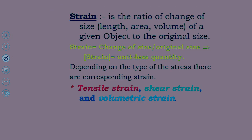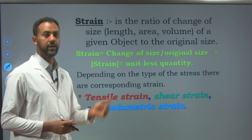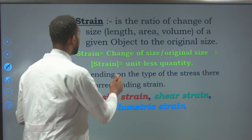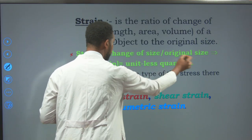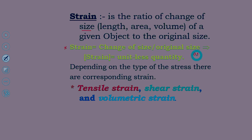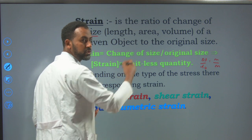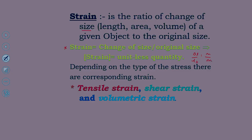The other important term under bulk matter is strain. Strain measures the ratio of change of size to the original size. The change might be in length, area, or volume. Strain equals change of size divided by original size. It is a unitless, dimensionless quantity — because change of length over original length gives meters over meters, which cancels out. Similarly, change of area over original area and change of volume over original volume are both dimensionless. Strain is a pure number.